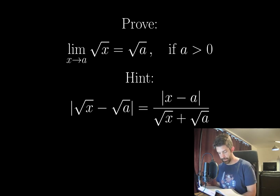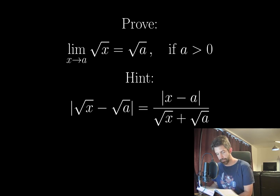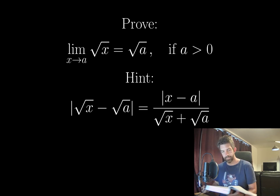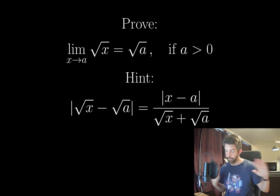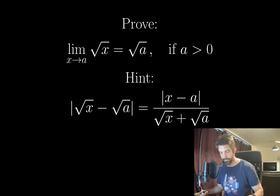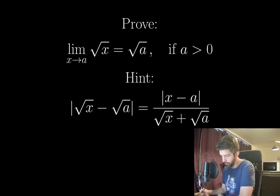We're given a hint, which is that the absolute value of the square root of x minus the square root of a is equal to the absolute value of x minus a divided by the square root of x plus the square root of a. Now because we're asked to prove this, especially considering the section of the textbook it comes from, we have to use the precise delta-epsilon version of the limit.